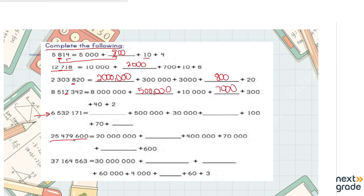Now an eight-digit number — the place value of the eighth digit is ten million. In this case we have two, which gives twenty million. Then we write how many single millions we have — we have five million. Remember there are six zeros in a million, so we put six zeros. Lastly, before six hundred, the thousands value is nine, so we write nine thousand.